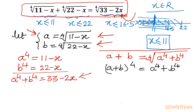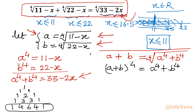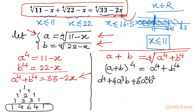I will use Pascal's triangle. For power 4, the coefficients are 1, 4, 6, 4, 1. So expanding the left side: a⁴ plus 4a³b plus 6a²b² plus 4ab³ plus b⁴ equals a⁴ plus b⁴. Cancelling a⁴ and b⁴ from both sides, we are left with: 4a³b plus 6a²b² plus 4ab³ equals 0.